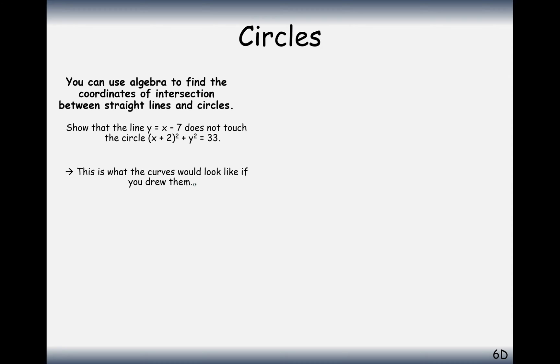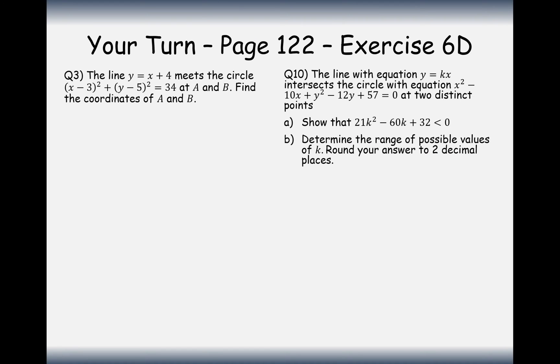What would this look like on a curve? Well, if we plot the equation of the curve, it would be at minus 2, 0, and a radius of square root of 33, and the equation of the line would look like this, y equals x minus 7. No intersections there. It's your turn to have a go at some questions now. Pause the video and see how you get on.